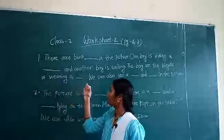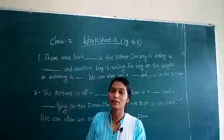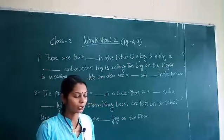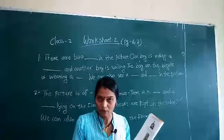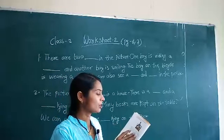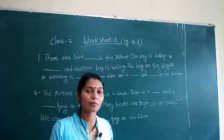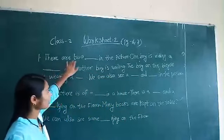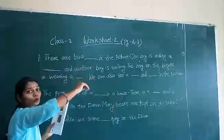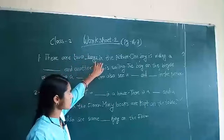Now in question number 1 and 2, a picture description has to be done. On page number 6, a picture is given and we have to describe it using common and proper nouns. In the picture, as you see in your textbook, there are two boys. One boy is riding a bicycle and the second boy is sailing a boat. So 'two boys' here belongs to common noun.